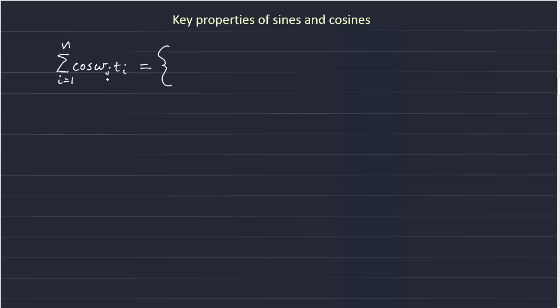The cosine of 0, so omega is 0, cosine of 0 is 1. If we sum 1 n times, we simply get n. That was the case where j was equal to 0 and omega 0 is equal to 0.